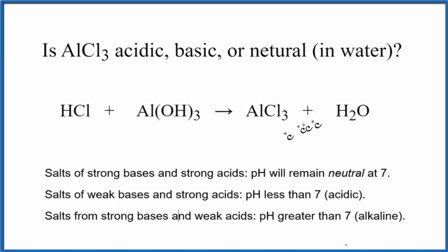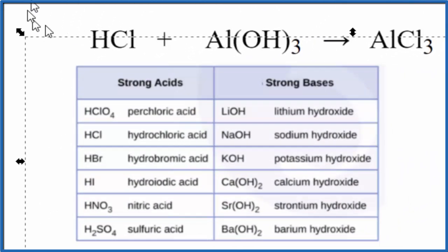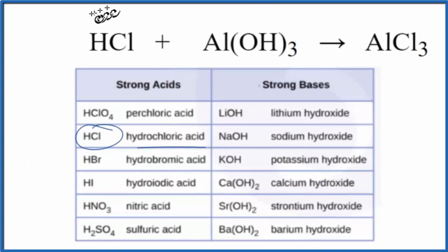Once we have this equation, we need to figure out the strength of each of the reactants. This table is really helpful, a very good table to memorize. Looking at the strong acids, we see hydrochloric acid right here. So this is a strong acid.